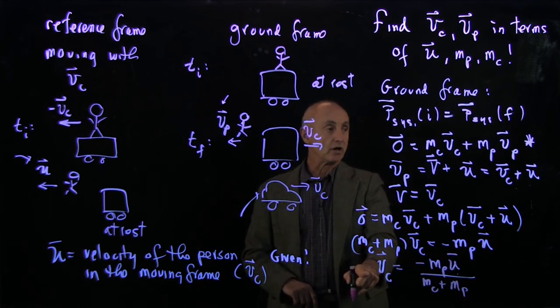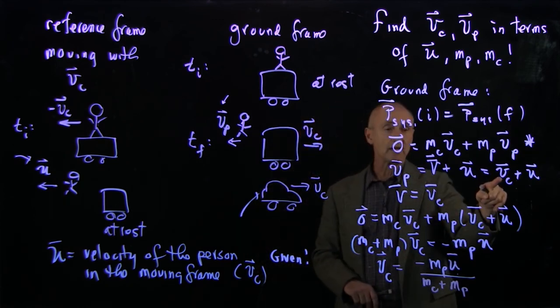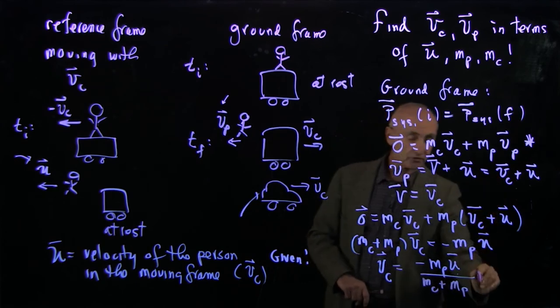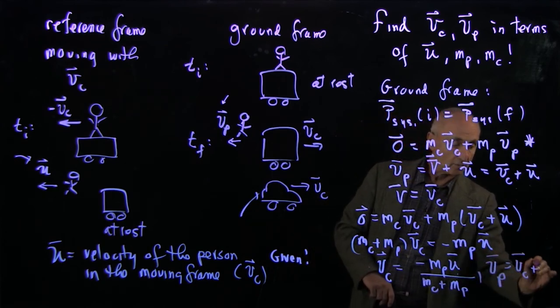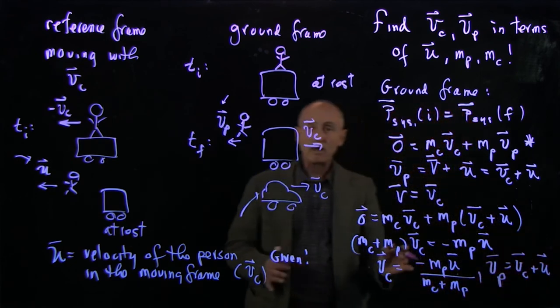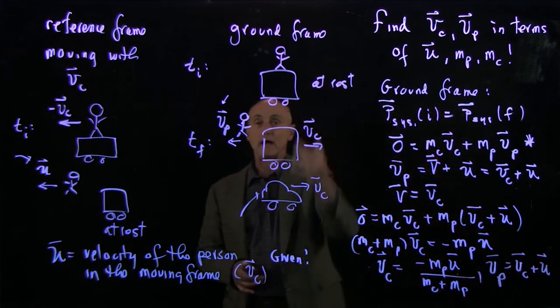Now that I have the velocity of the cart, I can just substitute that in here to find the velocity of the person, which, remember, was the velocity of the cart plus u. So now I've solved this problem in the ground frame.